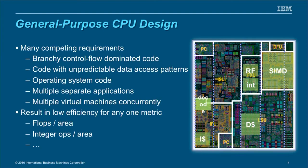From the point of view of the processor itself, it's a general-purpose CPU design. In any general-purpose processor, there are many competing requirements — you are trying to make one size fit all, and as we all know, one size doesn't fit all. There is branch and control-flow-dominated code, unpredictable data access patterns, operating system code, multiple separate applications, and multiple VMs running concurrently, which results in relatively low efficiency for any one particular metric — whether that's FLOPs per area or integer ops per area.